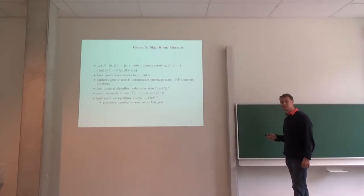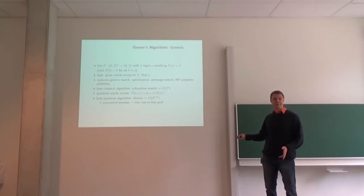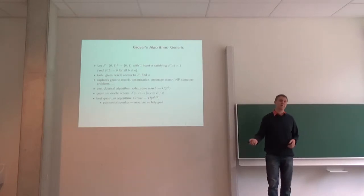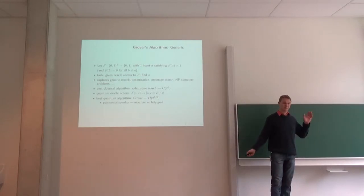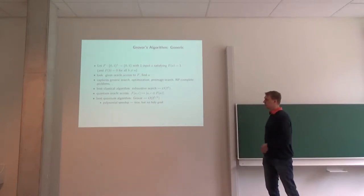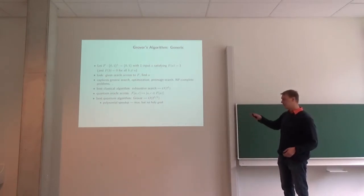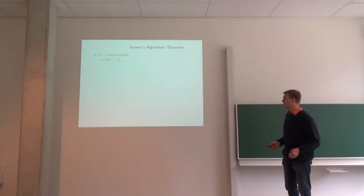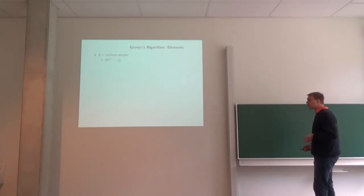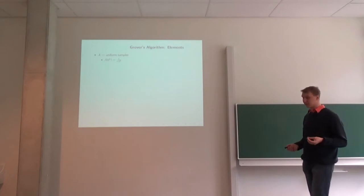So this is not a holy grail. But it's possible, all the same, for some problems to be classically infeasible and quantumly feasible with Grover's algorithm. So what do we need to implement Grover's algorithm?